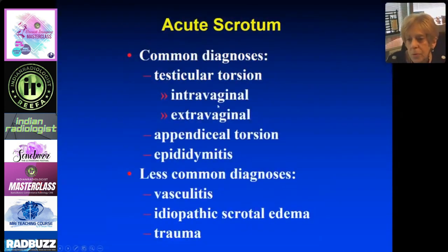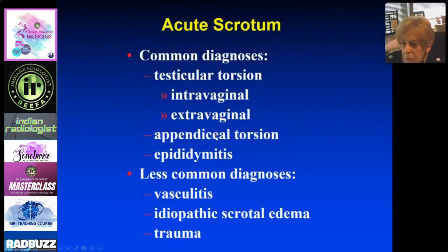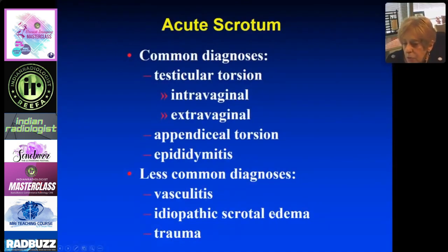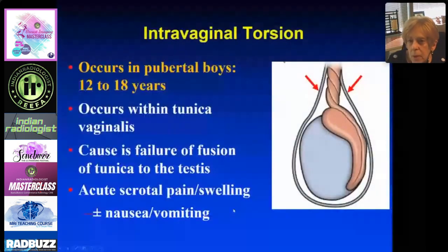The common diagnoses in the acute scrotum include torsion — intravaginal and extravaginal — appendiceal torsion, epididymitis, vasculitis, idiopathic scrotal edema, and trauma.